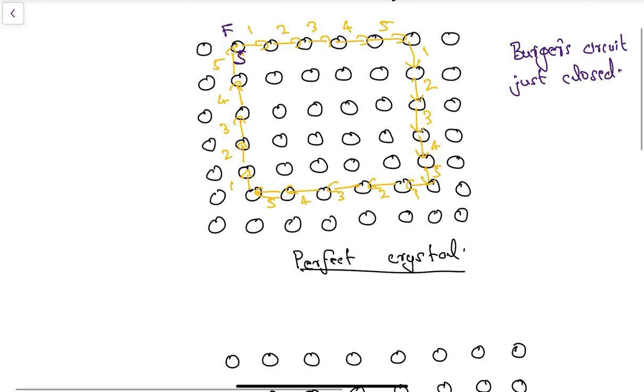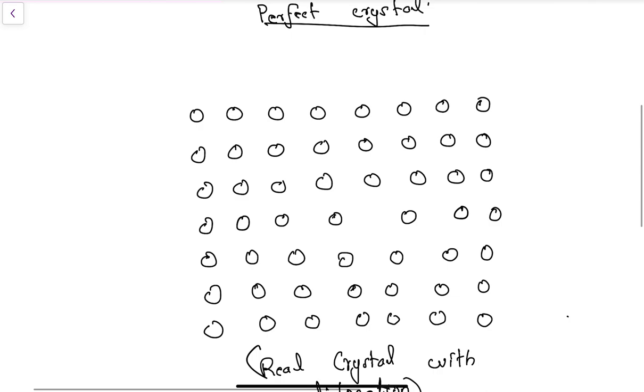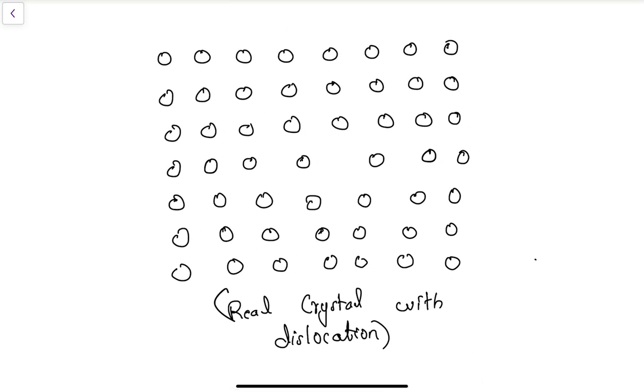Now, let us draw the Berger's circuit around an imperfection. Here you have a real crystal with a dislocation. You can see here there is a dislocation. Here you have a bottom edge of this extra half plane is missing. Let us draw the Berger's circuit around the dislocation.